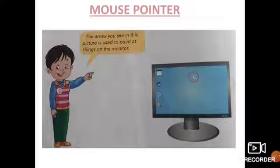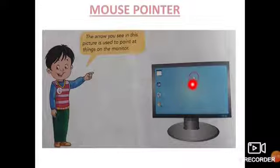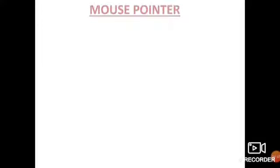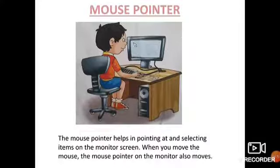Next we have the mouse pointer. When you look at the screen of your monitor, you can see an arrow mark — this is called the mouse pointer, which we use to point to things on the monitor. The mouse pointer helps in pointing and selecting items on the monitor screen. When you move the mouse, the mouse pointer also moves along with it.